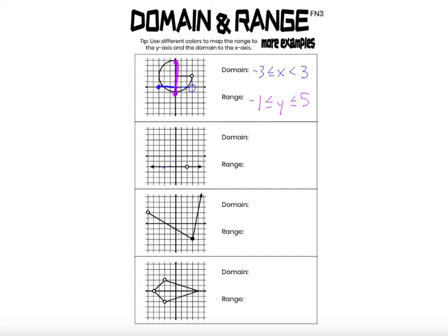Let's look at the second graph. The domain, looking from left to right — we may think the domain is all real numbers, but it's almost all real numbers. There's one particular value of x not in the domain, and that is 2. There is no point on this graph where the x-coordinate equals 2. A lot of students want to describe the domain as x < 2 or x > 2, but we can describe it more concisely as x ≠ 2.